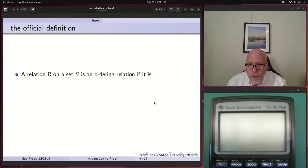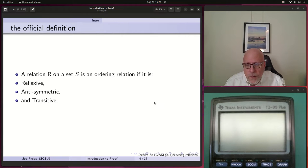Here's the official definition. A relation R on a set S is an ordering relation if it is reflexive, antisymmetric, and transitive. Note that it's got the same first and last properties as equivalence relations, but instead of symmetric, it's forced to be antisymmetric.